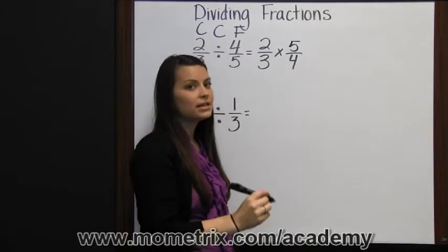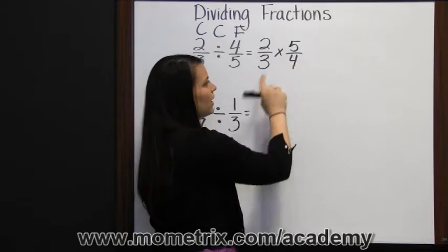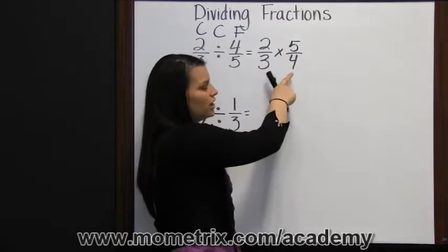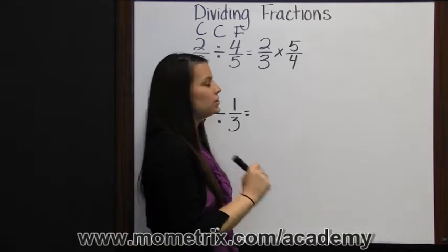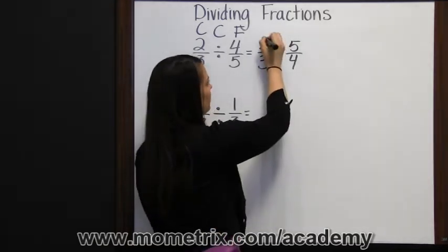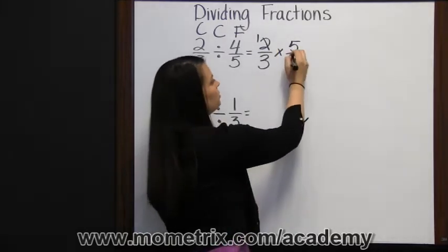Or we could simplify it first by dividing both two and four, the numerator of this fraction and the denominator of this fraction by their GCF of two. So two divided by two is one, and four divided by two is two.